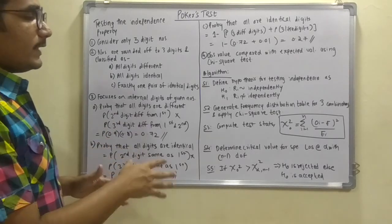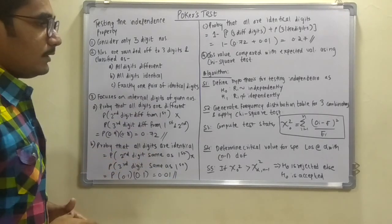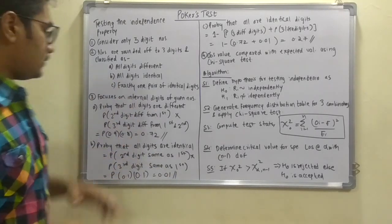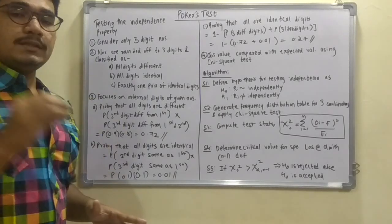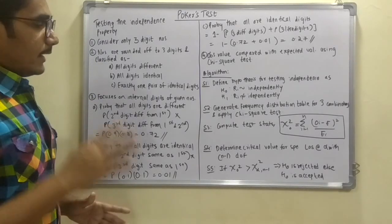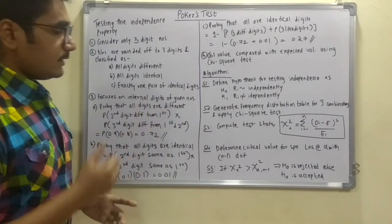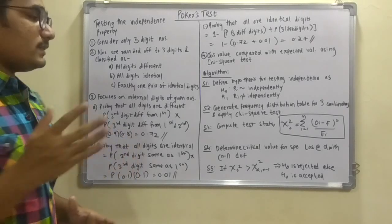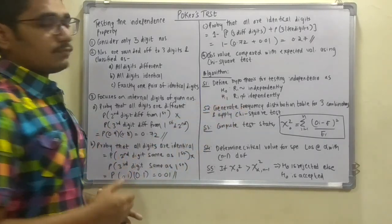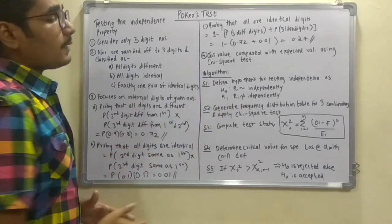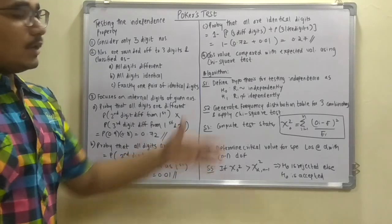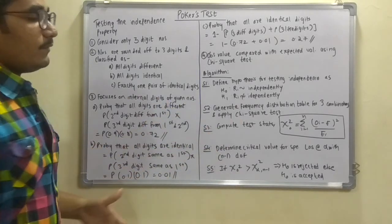Next you have to generate the frequency distribution table for three combinations, that is this ABC, by applying the chi-square test. And step three says that you have to compute the test statistics by using this formula: chi-0 square is equal to summation i from 1 to n, oi minus ei the whole square divided by ei.